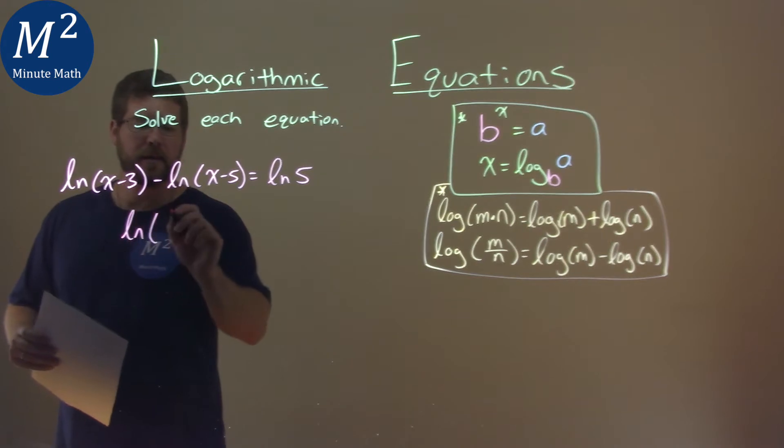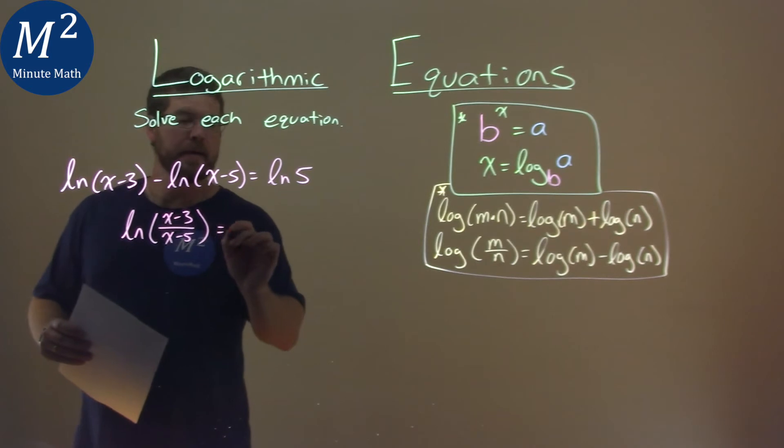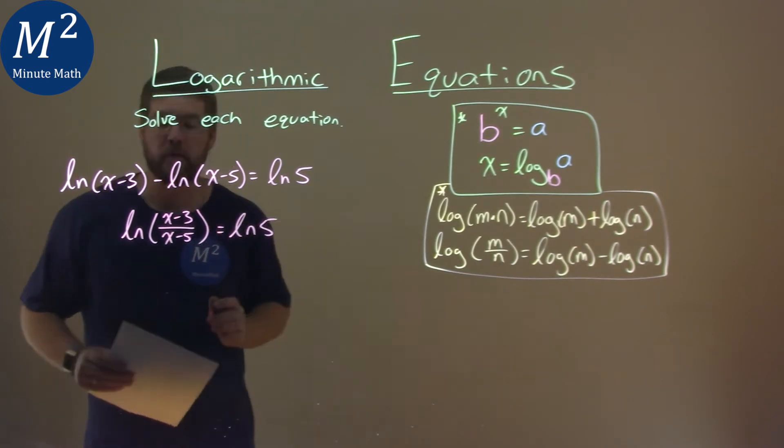Natural log, I take the x minus 3 over that x minus 5. And that's equal to natural log of 5 right there.